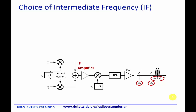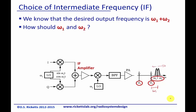Let's talk about the choice of the intermediate frequency. The distance between omega-2 and where the signal is, is omega-1. So this intermediate frequency is going to choose where we are with respect to omega-2. The question is: how do you choose omega-1 and omega-2? They both need to sum up to your target center frequency. For example, if you want to operate at 920 megahertz and omega-1 is 20 megahertz, then omega-2 would be 900 megahertz — not 920 megahertz, because we want to center it right there.